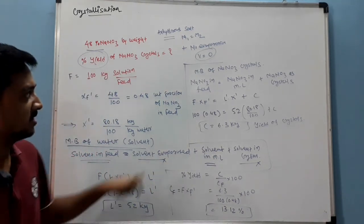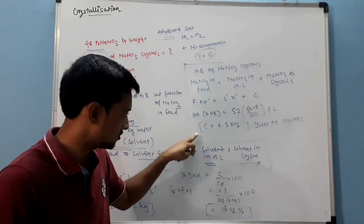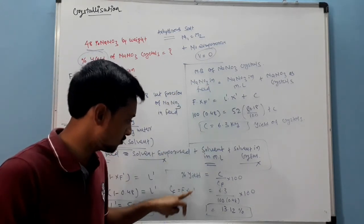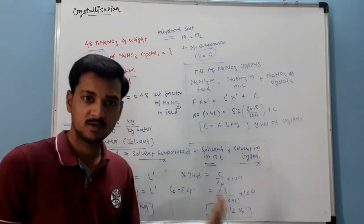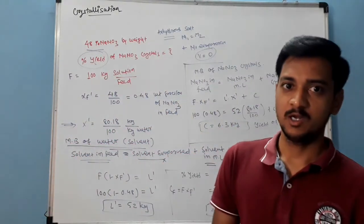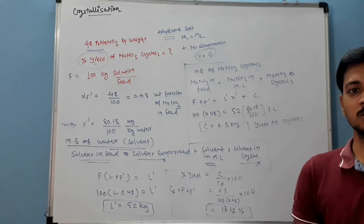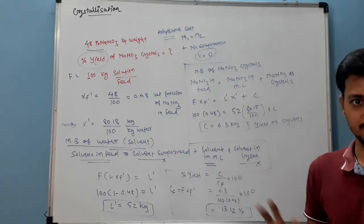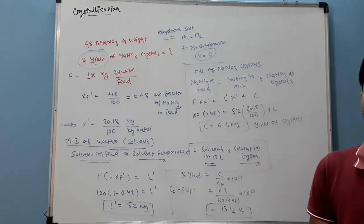By simplification, got the answer. Then crystal material balance, you got the answer of crystal, and then find out the percentage yield of crystals. If there is any doubt regarding this sum, comment it, we will try to solve it out. Thank you.